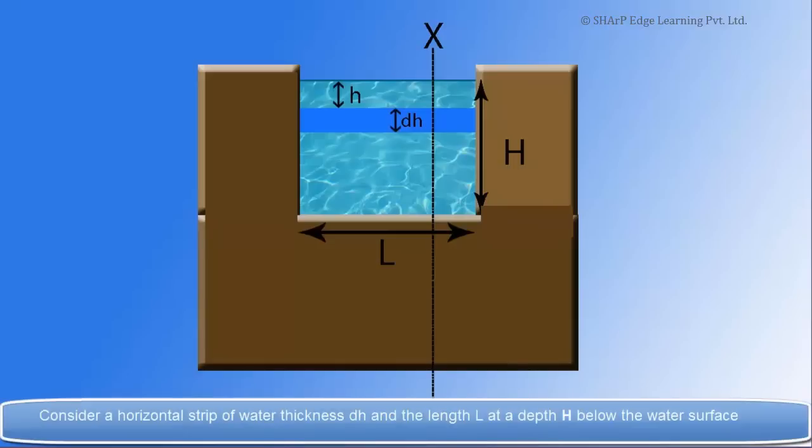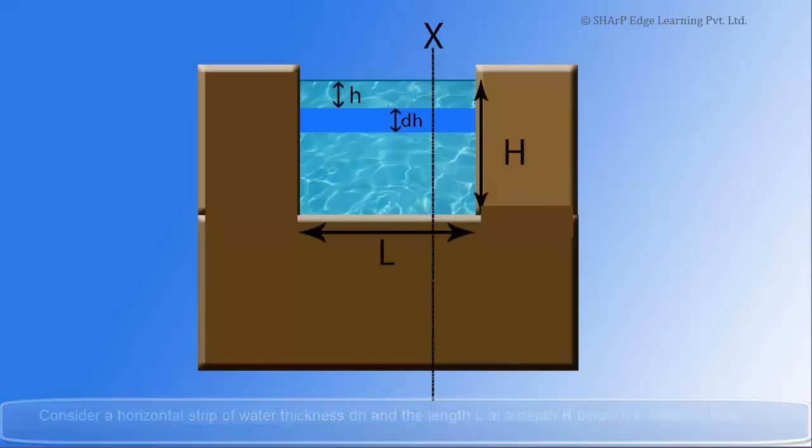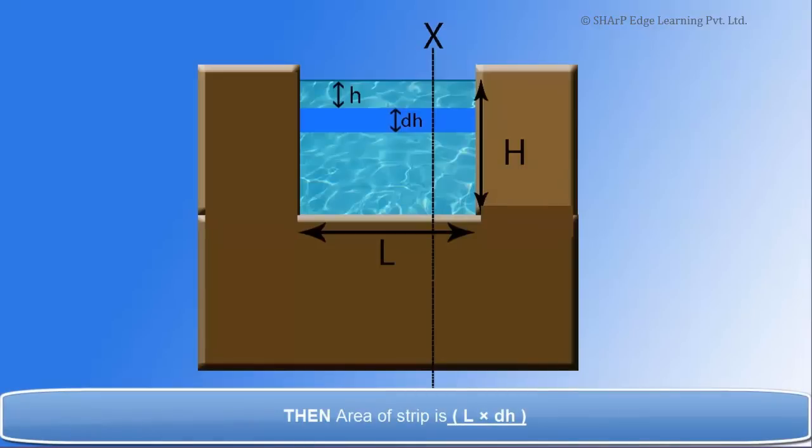Consider a horizontal strip of water thickness, dH, and the length L at a depth H below the water's surface. Then, area of strip is L into dH.